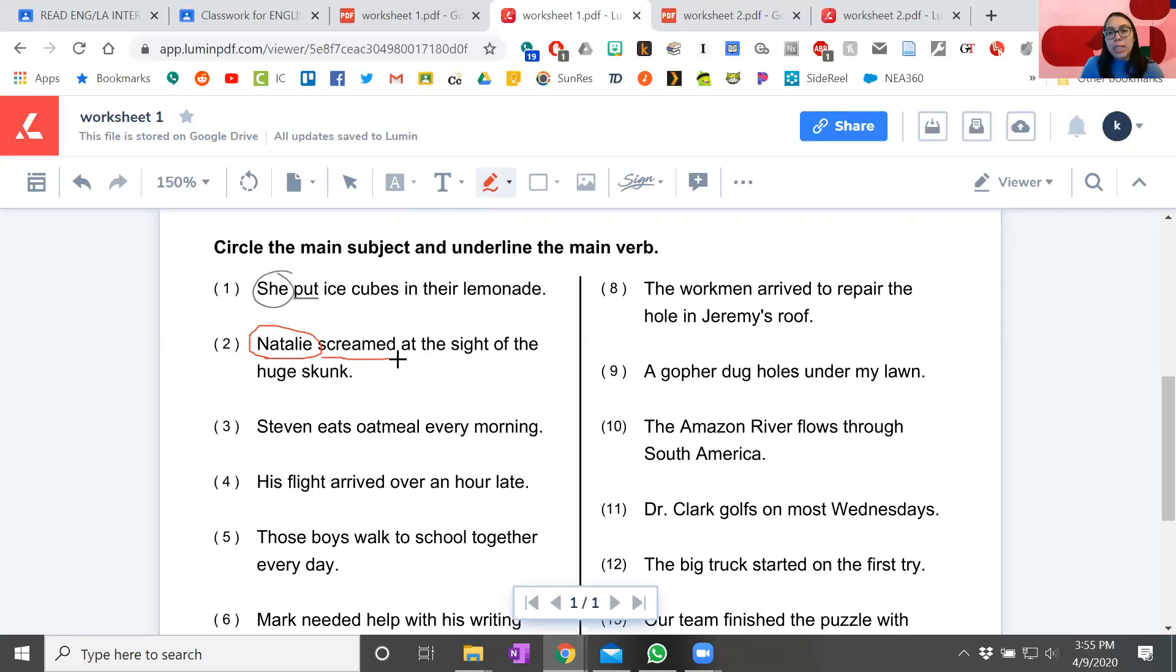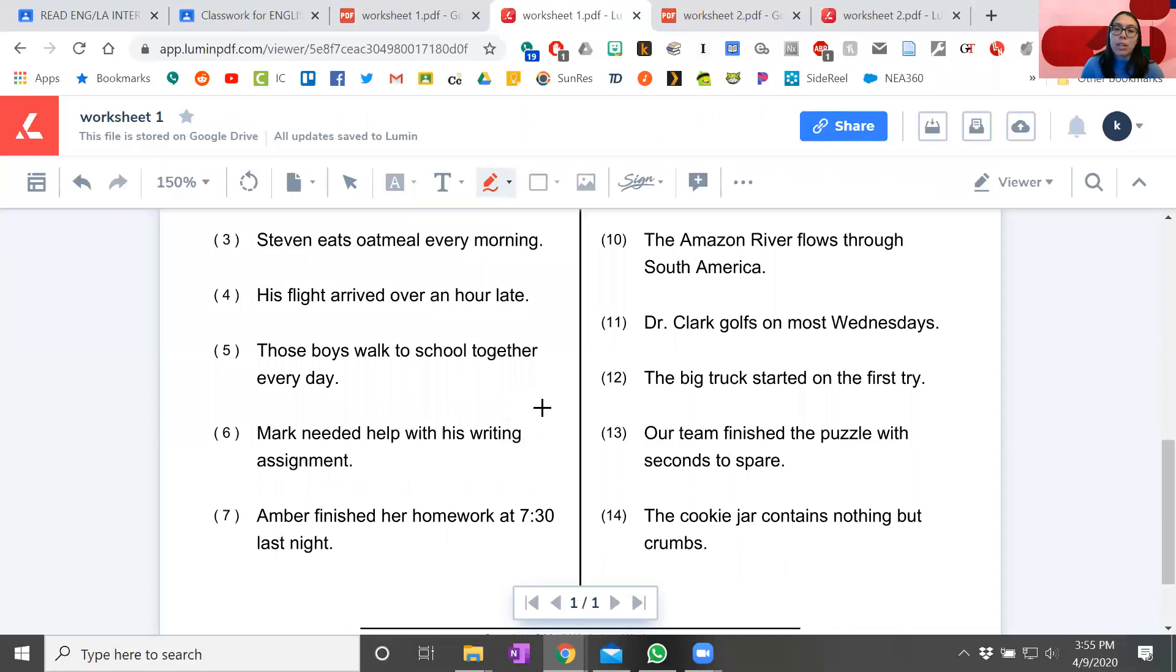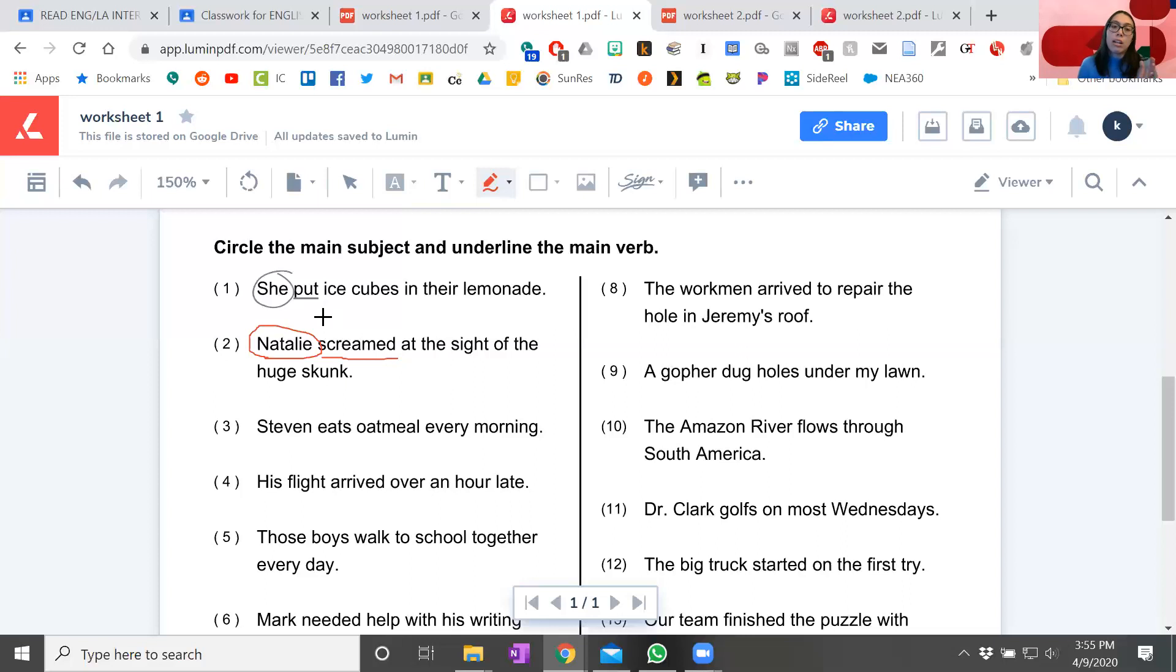Now in some sentences, there might be more than one word that describes who did it. In other sentences, there might be more than one word to describe what they did, but that's okay. You can always circle or underline more than one word, but you're really not circling or underlining that whole sentence. You're just looking for the most important words. Who did it? What they did.